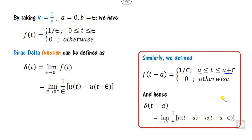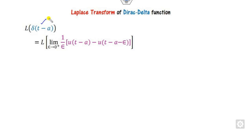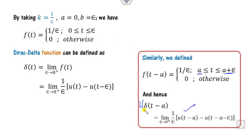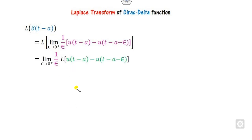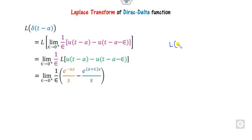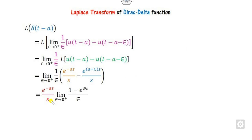How can we find the Laplace transformation of this delta function? We start with the definition — taking the Laplace on both sides. Since Laplace is a function over t, the 1/epsilon part is a constant and can be taken outside. We use the known result that the Laplace transform of u(t minus a) is e^(minus as) divided by s. In this case 'a' is replaced by a+epsilon, and the limits are with respect to epsilon.